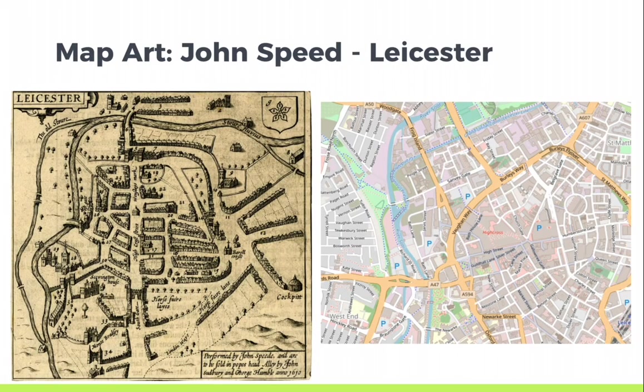Valdez-Tulet uses the example of this John Speed map of Leicester, wherein you can identify the buildings, walls, trees, and the river that winds through Leicester. This is in contrast to a current map, which has some representation of green space, but focuses on the transport around and through the town.